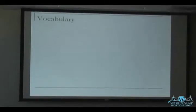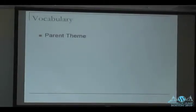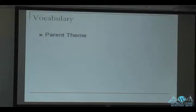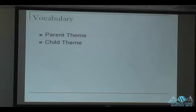First, a little bit of vocabulary. Let's hold all questions until the end, and then we can answer them all at once. What is a parent theme? A parent theme is any theme being used by a child theme to support it. A child theme is a subset of theme files consisting of at least a style.css file that references back to a parent theme, which contains everything else that the theme needs to function. Anything that doesn't exist in the child theme needs to exist in the parent theme.